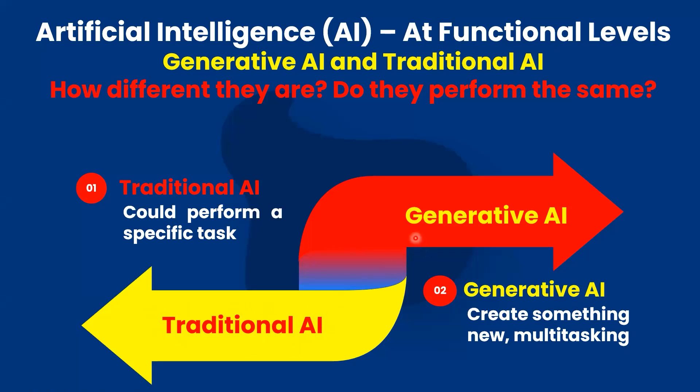Whereas Generative AI can create new content, mimicking or generating content like what humans might produce. An example is ChatGPT.